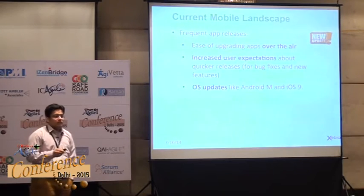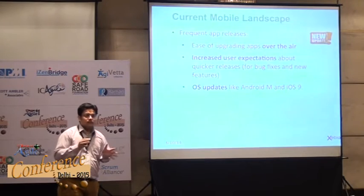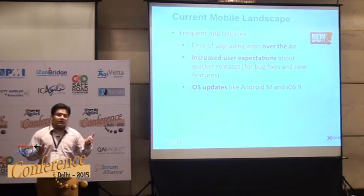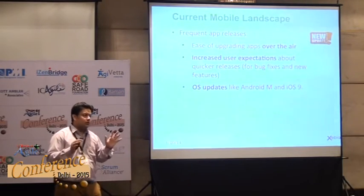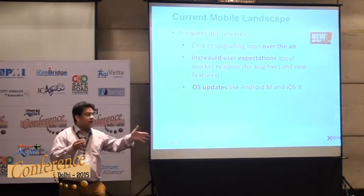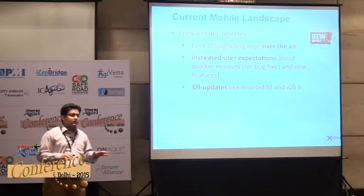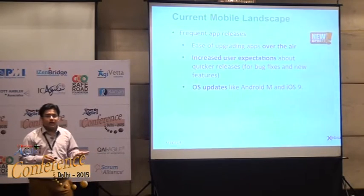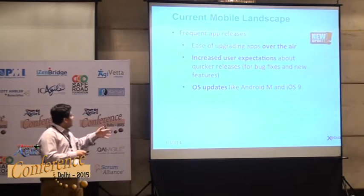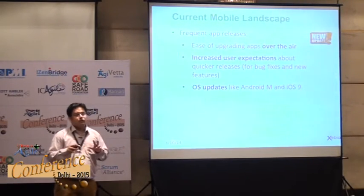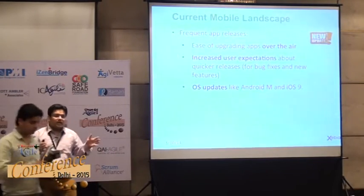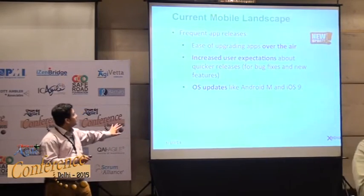What does the current mobile landscape look like? There are frequent app releases. The first reason is the ease of updating apps over the air. There was a time when you got a CD or an .exe package and deployment took five to ten minutes. But now it is just clicking one button — you have an update, click OK, and your app is updated. Because it is that easy to update apps, user expectations have increased; even for minor bug fixes, users expect newer versions very quickly. The third part is OS updates — in the last few weeks we have seen two major releases: Android M and iOS 9. Every major app will be releasing newer updates for these OSes in the coming weeks.